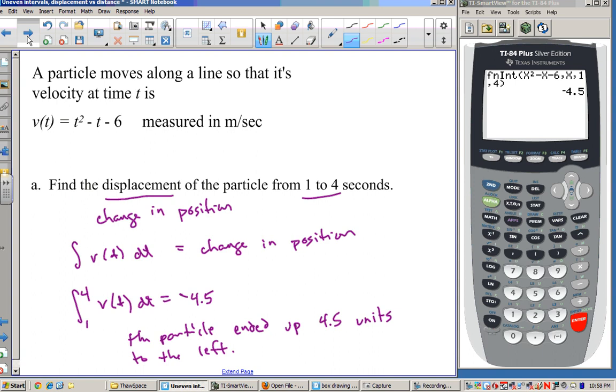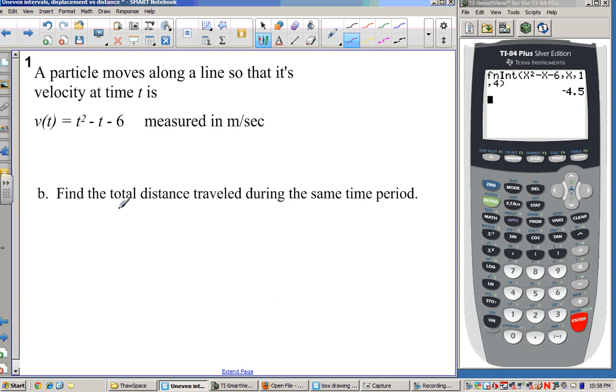Now, in our next problem, we're going to be asked here for the total distance. And if we're interested in total distance, then we're also interested, did this particle ever change direction? So let's set the velocity to 0 and see, did we ever have a time when it changed direction? Well, this looks factorable, so let's give that a go. So we've got t minus 3 and t plus 2. So we get two places where this equals 0.